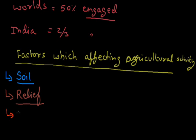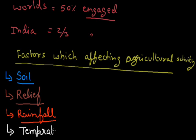Another factor is rainfall, which is very important. Rice needs 200 cm or more of rainfall, while wheat needs 75 cm. Many millet crops need less than 50 to 75 cm of rainfall. So based on rainfall, farmers grow different types of crops. Another important factor is temperature. Many crops need high temperature and are grown in torrid zones, while wheat and some other crops are grown in temperate regions.